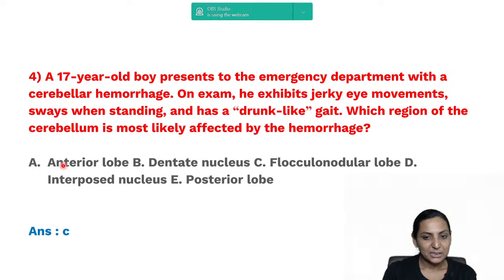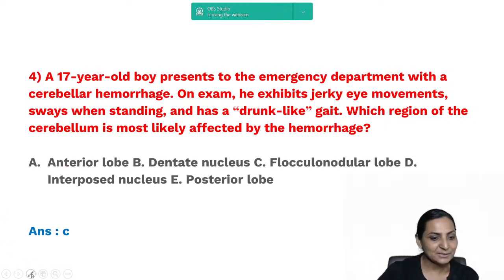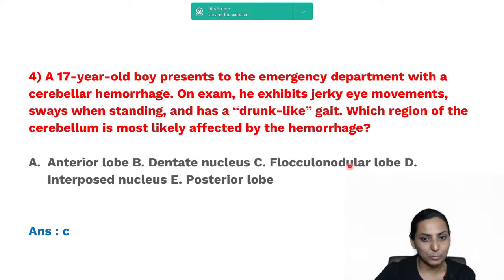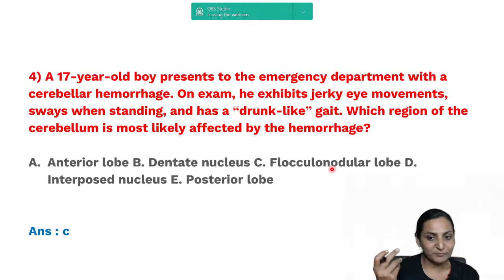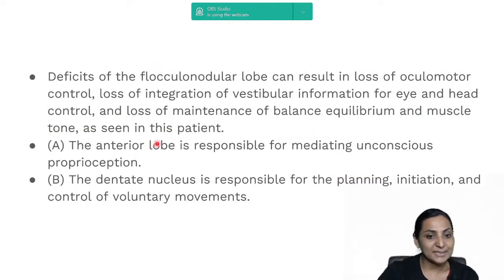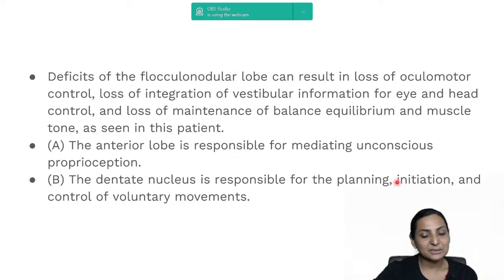In the functional classification of the cerebellum, we have the spinocerebellum, the neocerebellum (lateral cerebellum), and the flocculonodular lobe — the vestibulocerebellum. The vestibulocerebellum, connected to the vestibular apparatus, plays an important role in posture and equilibrium. The vestibular nucleus controls movements of the head, neck, and eyes. The anterior lobe is responsible for unconscious proprioception; the dentate nucleus handles planning, programming, and initiation of voluntary movements. Deficits of the flocculonodular lobe result in loss of maintenance of equilibrium.